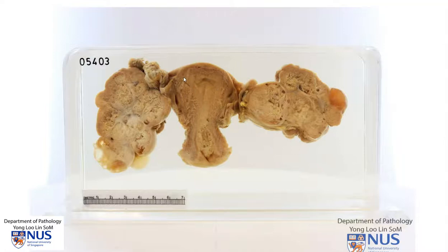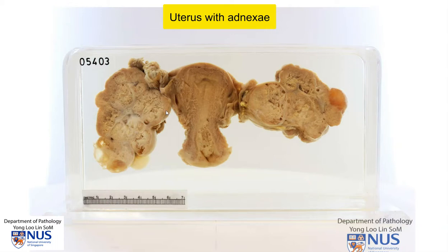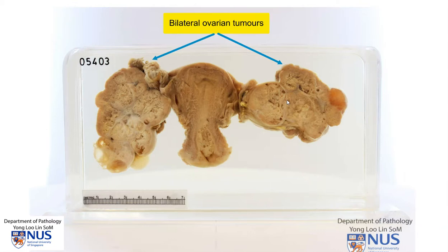Hello, this is a cross pathology specimen comprising the uterus with the uterine cervix and bilateral adnexal structures. The very obvious pathology is that both the adnexae are very enlarged and we're looking at the cut surfaces of bilateral ovarian tumors.